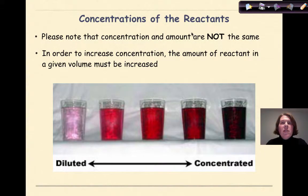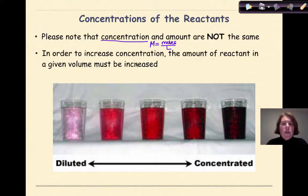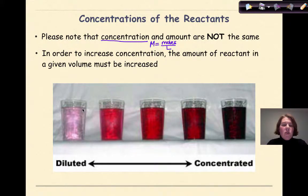Now let's talk about the concentrations of the reactants. Remember, concentration and amount are not the same thing. Concentration specifically refers to molarity, and we know that the formula for molarity is: molarity equals moles over liters. Amount can be pretty much anything — grams, moles, something more specific — while concentration is always a relationship between moles and volume. In order to increase concentration, the amount of reactant in a given volume must be increased. We can see from this image: dilute concentration has not many moles of the particular particle dissolved in the water, and high concentration has a greater number of moles of particles in a given volume.